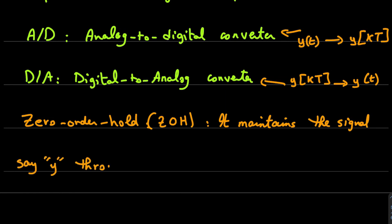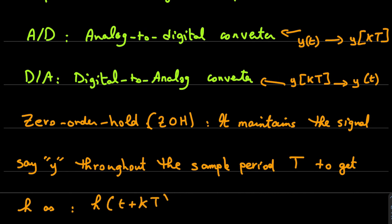For the zero-order hold (ZOH), it maintains the signal throughout the sampling period T to get a discretized signal.